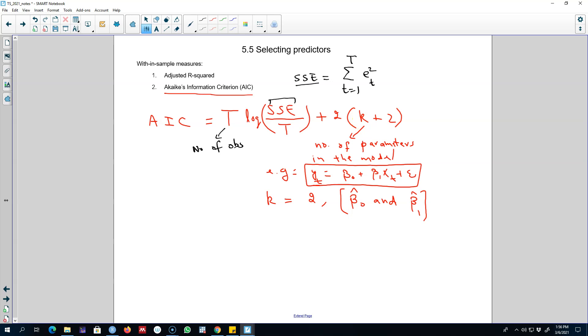K here is the number of parameters in the model. For example, if we're regressing a model like this, our k equals 2 because we are estimating two parameters: beta 0 and beta 1.